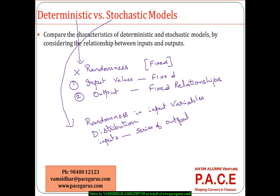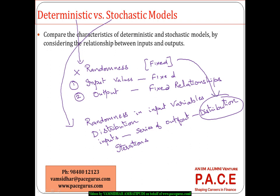There is a way that we get a distribution of the output as well. Based on the kind of distribution we associate with the inputs, we can observe the pattern of the distribution with respect to the output. This means iterations are performed to understand the behavior of both the input and the output. The output in case of the stochastic model is always a distribution, not a single value.